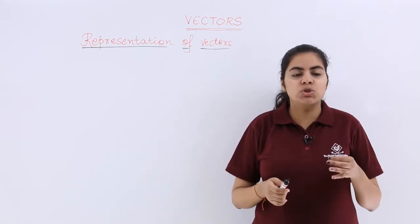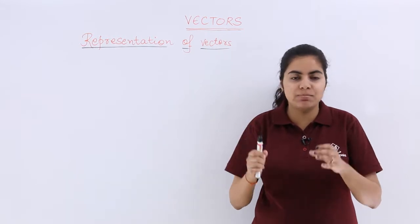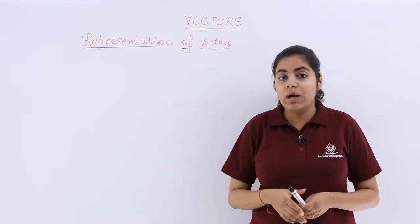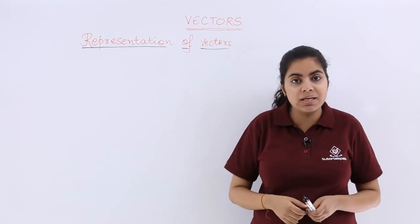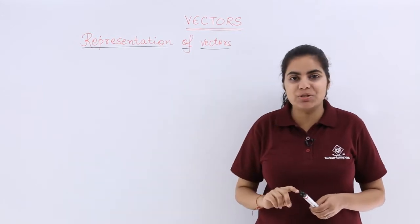Vectors, as you know, should have both direction as well as magnitude. When you have to represent them, you have to definitely represent both things - direction and magnitude.